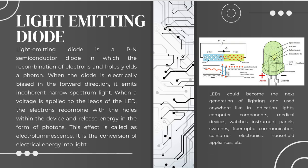Light Emitting Diodes. A light emitting diode is a PN semiconductor diode in which the recombination of electrons and holes yields a photon. When the diode is electrically biased in the forward direction, it emits incoherent narrow-spectrum light. When a voltage is applied to the leads of the LED, electrons recombine with the holes within the device and release energy in the form of photons. This effect is called electroluminescence — the conversion of electrical energy into light. LEDs could become the next generation of lighting, used in indication lights, computer components, medical devices, watches, instrument panels, switches, fiber optic communication, consumer electronics, household appliances, and more.